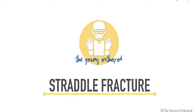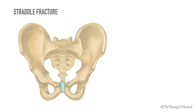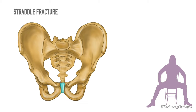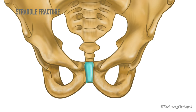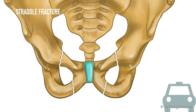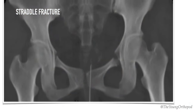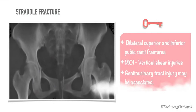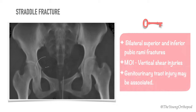Straddle fracture — 'straddle' means to sit or stand with one leg on either side, as on a bike or horse. A straddle fracture is characterized by bilateral superior and inferior pubic rami fractures. The mechanism is strong vertical shear injuries such as a fall from height or a motorcycle accident. With a straddle fracture, there is a 40% chance of injury to the genitourinary tract, especially the posterior urethra and urinary bladder in men.